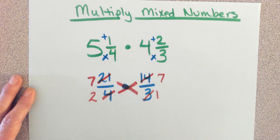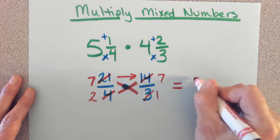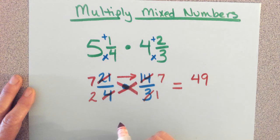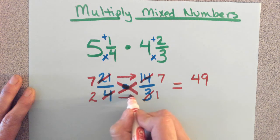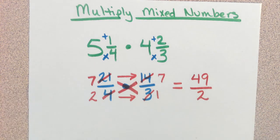Now we have some smaller numbers. Top times the top. What's seven times seven? Forty-nine. What's the bottom times the bottom? Two. Two.